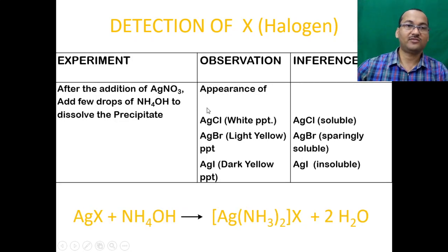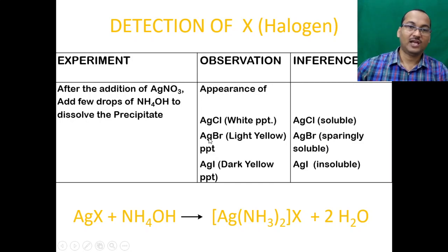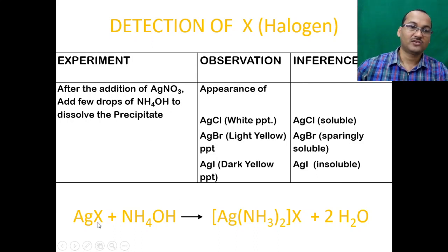To the same solution, add ammonium hydroxide solution. AgCl (white precipitate) will be totally soluble in ammonium hydroxide. AgBr (light yellow precipitate) will be sparingly soluble. AgI (dark yellow precipitate) will be insoluble in ammonium hydroxide. The silver halide reacts with ammonium hydroxide to give the diamine silver complex [Ag(NH₃)₂]⁺X⁻.